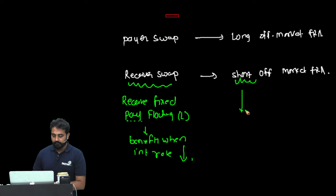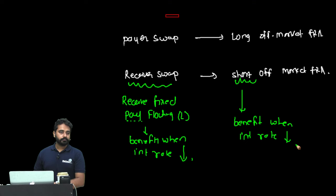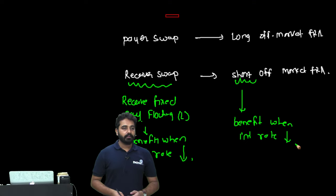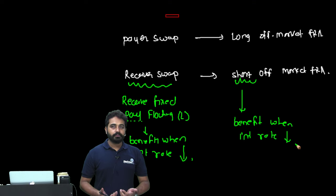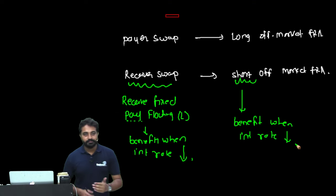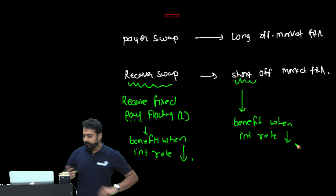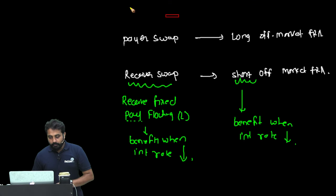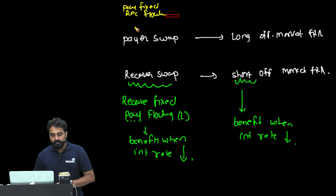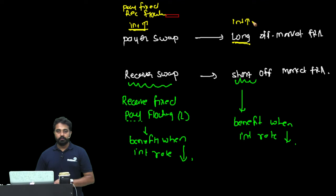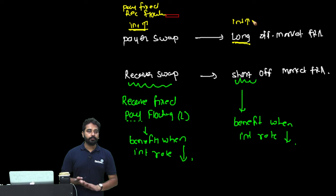Here is the conceptual logic so you don't need to memorize. For a receiver swap: you receive fixed and pay floating, so you want floating rates to go down — same as a short FRA which benefits when rates go down. For a payer swap: you pay fixed and receive floating, so you want rates to go up — same as a long FRA which benefits when rates go up. Build similar products conceptually rather than memorizing.